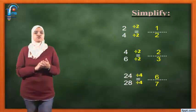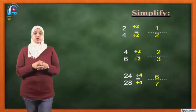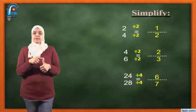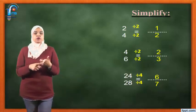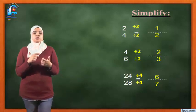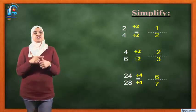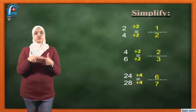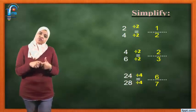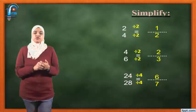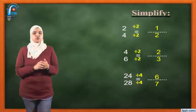24 over 28 equals what? 24 and 28 are in table 2 because they are both even numbers. They're also in table 4. Which is greater, 2 or 4? I'm going to use the greatest one. So divided by 4 up and divided by 4 down. The answer will be 6 over 7.